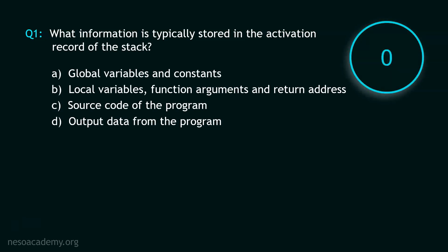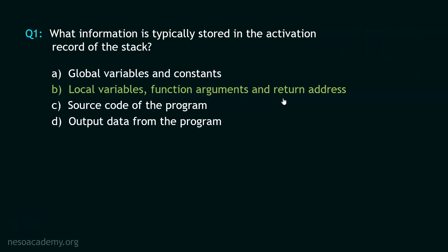Stop. The correct option is option B: local variables, function arguments, and return address. It is clear that the information typically stored in the activation record of the stack are local variables, function arguments, and return address. Now let's move to question number 2.